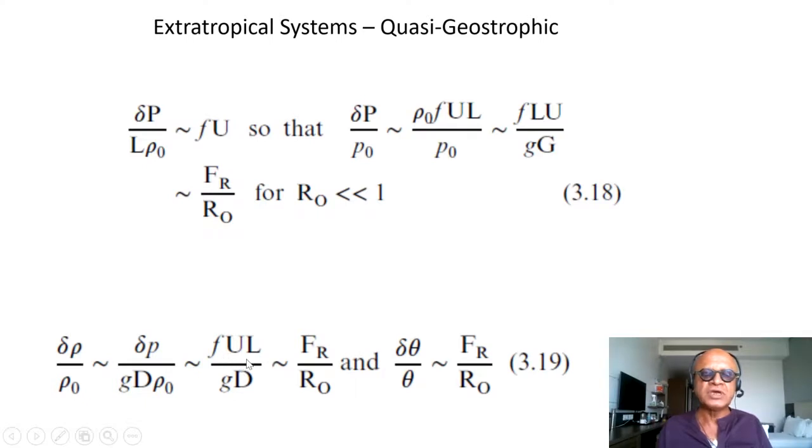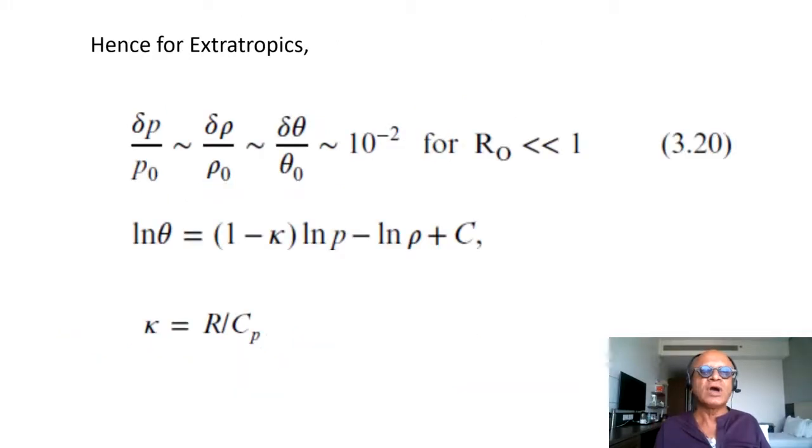This is approximately equal to F·U·L/(G·D), which is again equal to the Froude number divided by R₀, because the gravitational wave speed is in there. That can be written in terms of potential temperature because the density and potential temperature are related through ideal gas law, which is equal to again Froude number divided by R₀. Essentially this amounts to the extratropics with this potential temperature relation where κ is R divided by Cp, the heat capacity at constant pressure.